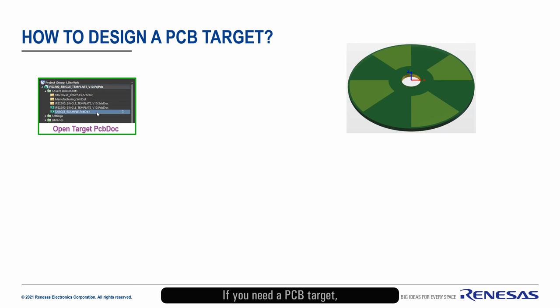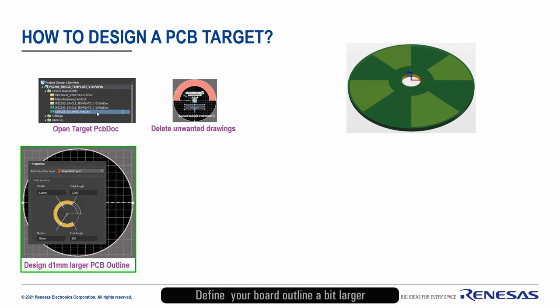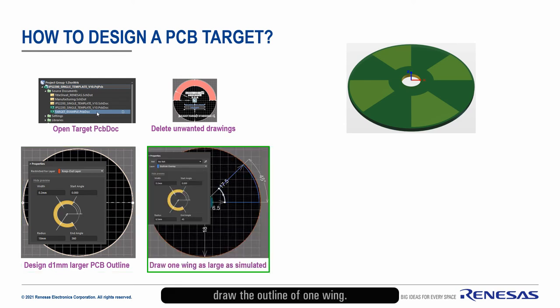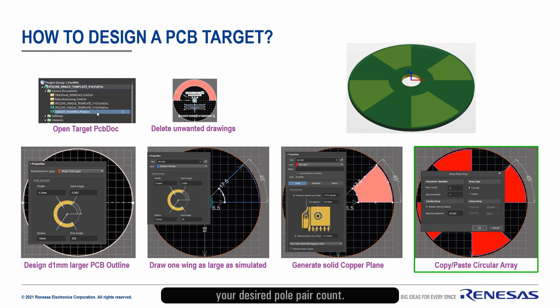If you need a PCB target, you can modify the one you find in the Altium project template. Delete any unwanted and unused drawings. Define your board outline a bit larger than your copper outer diameter. A safety distance is needed to be kept for PCB manufacturing tolerances. For a rotary target, draw the outline of one wing. Use the exact same dimensions as simulated by the ICOT. Generate a solid copper plane and multiply that to match your desired pole pair count.